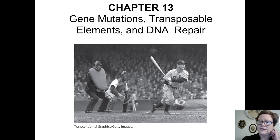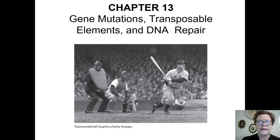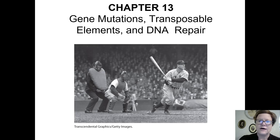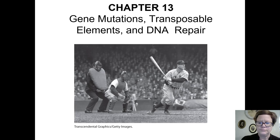In the vignette for the chapter, you see Lou Gehrig. He's a baseball player who had ALS, amyotrophic lateral sclerosis, and ALS is often referred to as Lou Gehrig's disease. You'll get to read about him in the vignette.